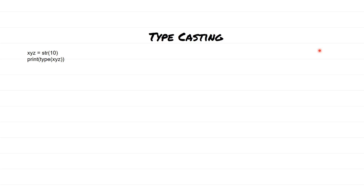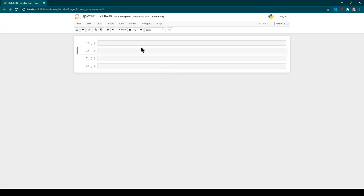Please notice that in certain cases you may really require changing the data type from one type to another. That can be easily done by using typecasting. In typecasting, you can use the variable name, give an equal sign, and while defining the value — for example, 10 — you use the str() function. So str(10) is casting this numeric value of 10 into a string. Now xyz is going to have a value of type string instead of integer.